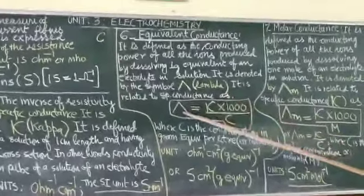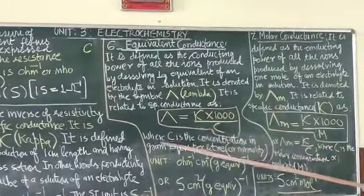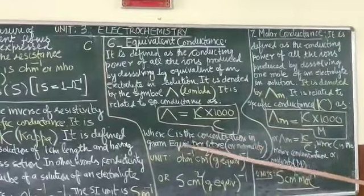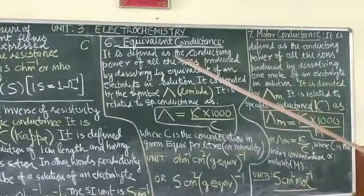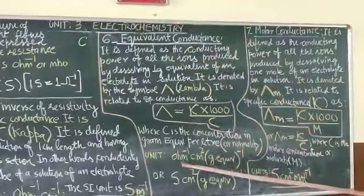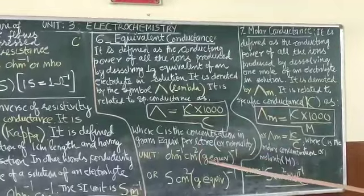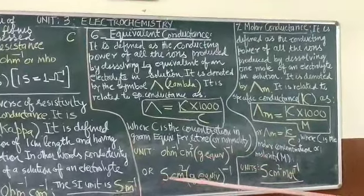By the relation lambda equals kappa into 1000 upon C, where C is the concentration in gram equivalent per liter or normality. The units of equivalent conductance are ohm inverse centimeter square gram equivalent inverse, or siemens centimeter square gram equivalent inverse.